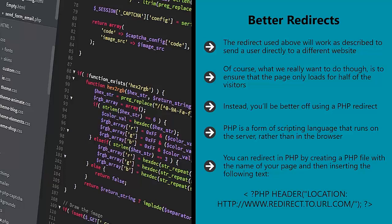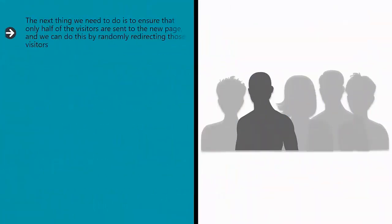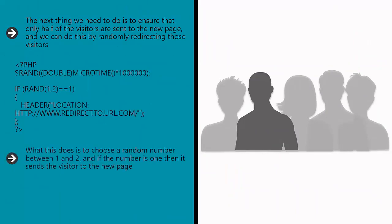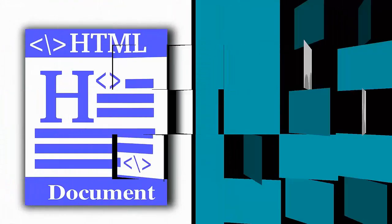Even if they were to view source, the source they'd see would be the HTML for the new page. The next thing we need to do is to ensure that only half of the visitors are sent to the new page, and we can do this by randomly redirecting those visitors. What this does is choose a random number between 1 and 2 — and if the number is 1, then it sends the visitor to the new page; if not, they stay where they are. This works by using a timer to choose the number, hence the need for the microtime part.